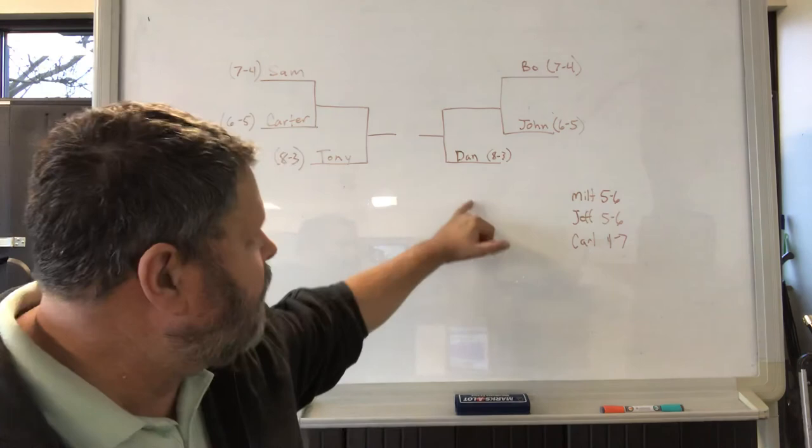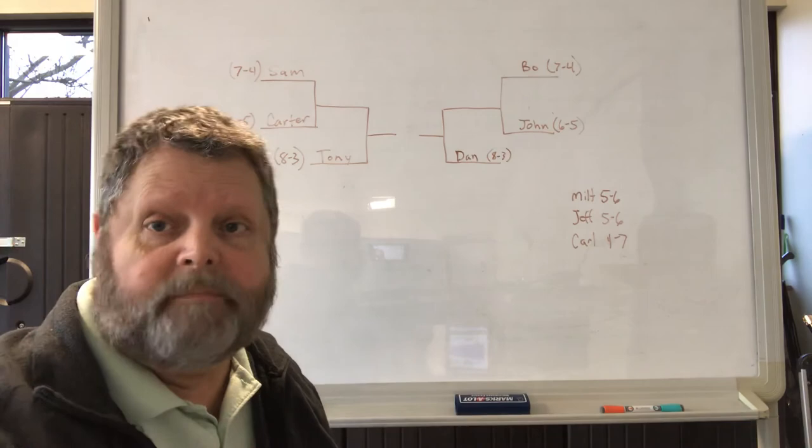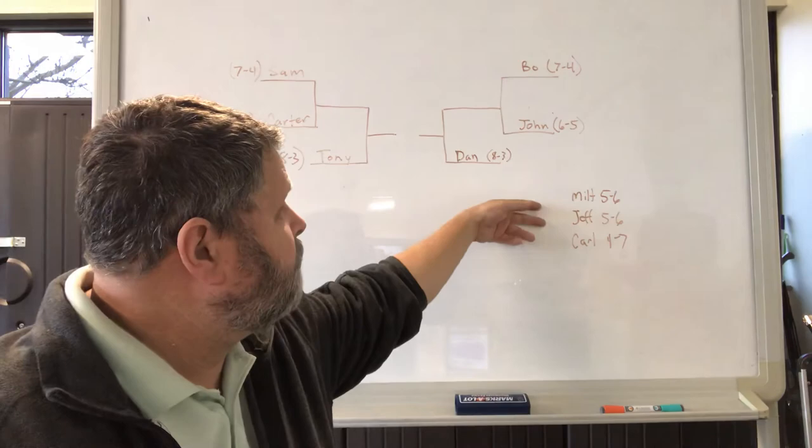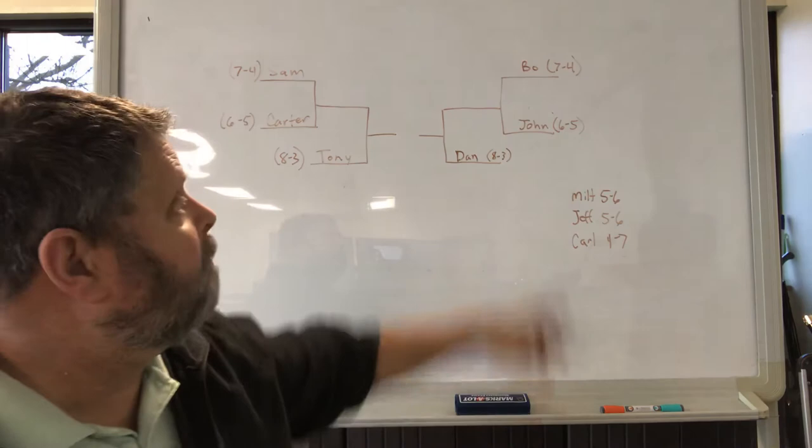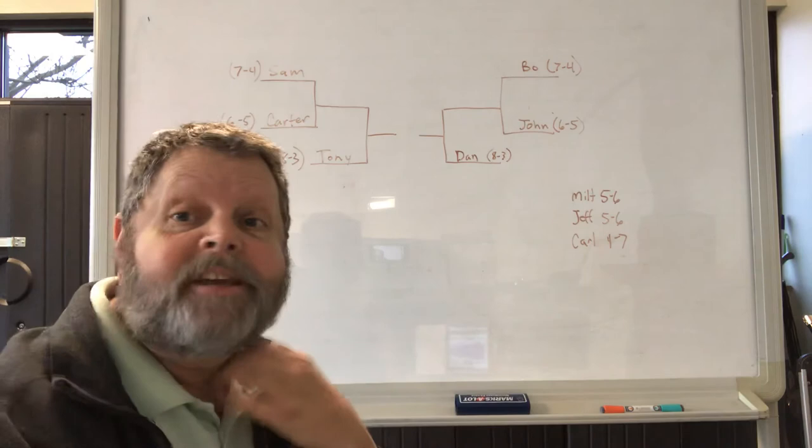All right. So over in the other side of the conference is the NFC. Currently you've got Dan as the number one seed with eight and three. You've got Bo with seven and four and John with six and five. However, this conference is definitely not as far from over because you've still got these three guys. You've got Milt, you've got Jeff, and you've got Carl. Two teams with five and six and Carl with four and seven. But there is an opportunity here. It's still wide open for anybody because Bo could take the number one seed. If he wins out and Dan loses out, those kind of things could happen.